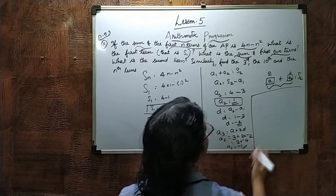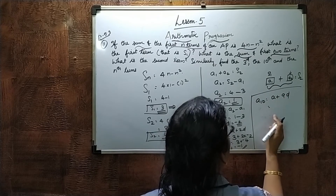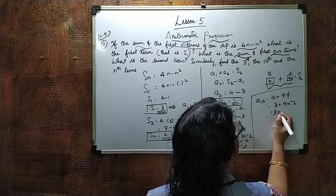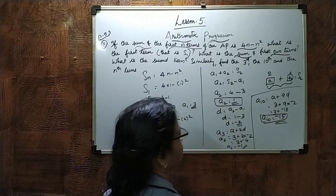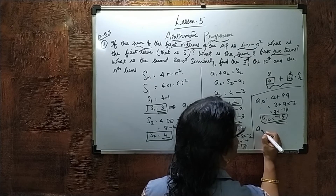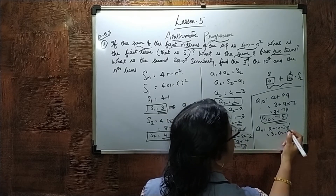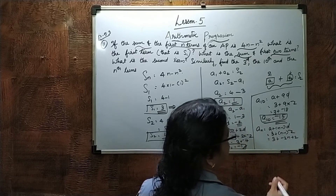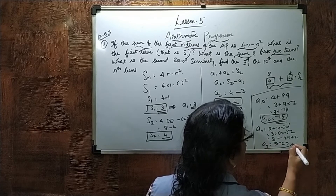The tenth term A10 equals A plus 9D, which is 3 plus 9 into negative 2, giving 3 minus 18, so A10 equals negative 15. For the nth term, An equals A plus (N minus 1) into D, which is 3 plus (N minus 1) into negative 2. Expanding: 3 minus 2N plus 2, so An equals 5 minus 2N.